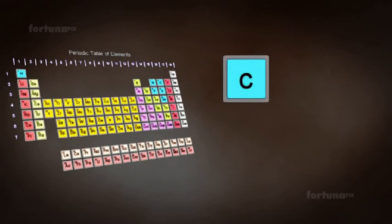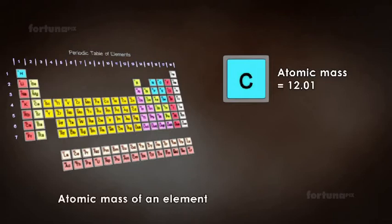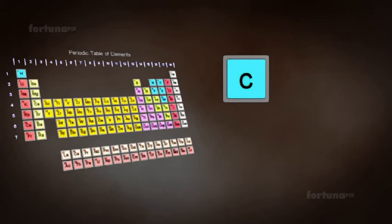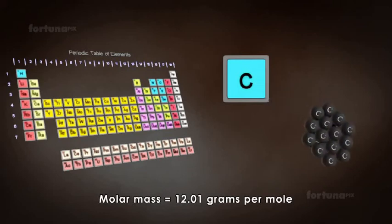Let's consider carbon. Its atomic mass as found in the periodic table is 12.01. The atomic mass of an element will be equal to the molar mass in grams. This means the molar mass of carbon is 12.01 grams per mole.